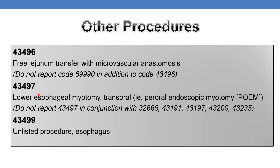CPT 43497 is lower esophageal myotomy, transoral — for example, per oral endoscopic myotomy (POEM). Do not report 43497 in conjunction with 32665, 43191, 43197, 43200, and 43235. Finally, CPT 43499 deals with unlisted procedure, esophagus. With this, we complete the esophagus topic.